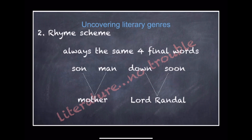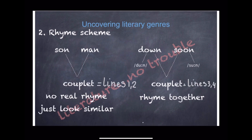Now let's look at the rhyme scheme. We can find the same four final words in each stanza. The last words in lines one and two look similar, but they don't really rhyme, while the last words of lines three and four rhyme together. So we can say that Lord Rendell follows an ABCC rhyme scheme.